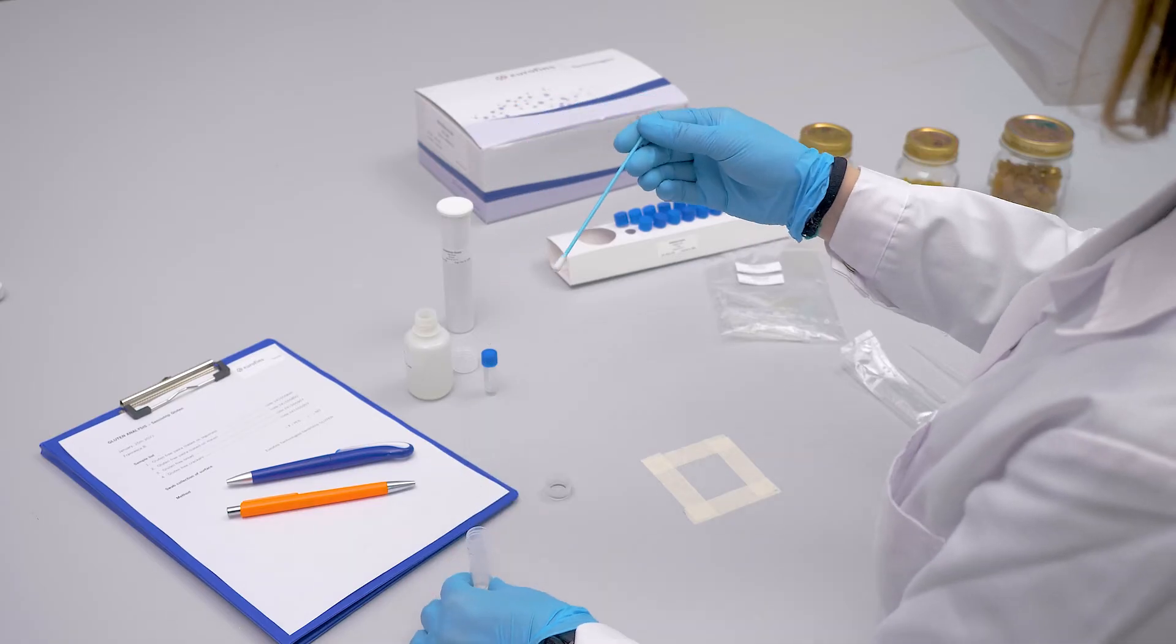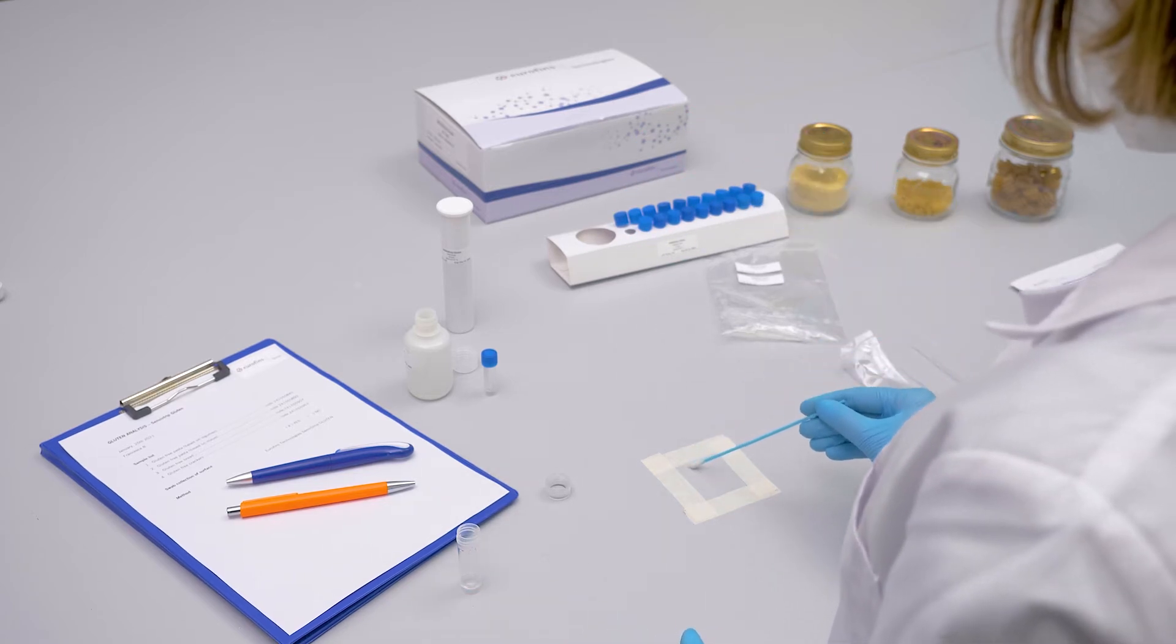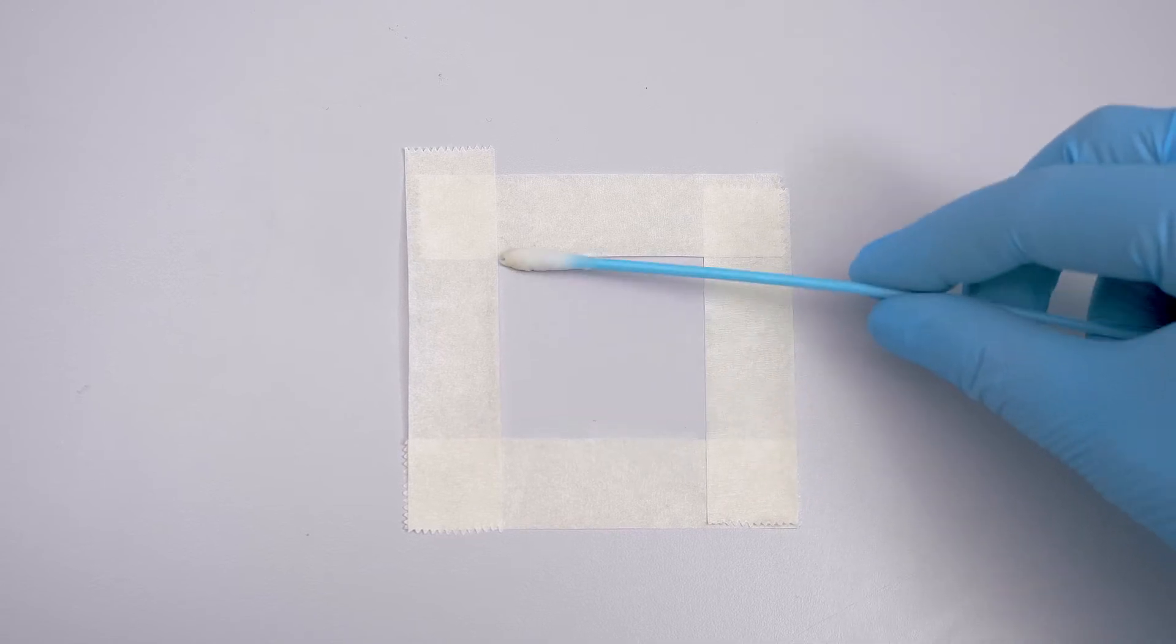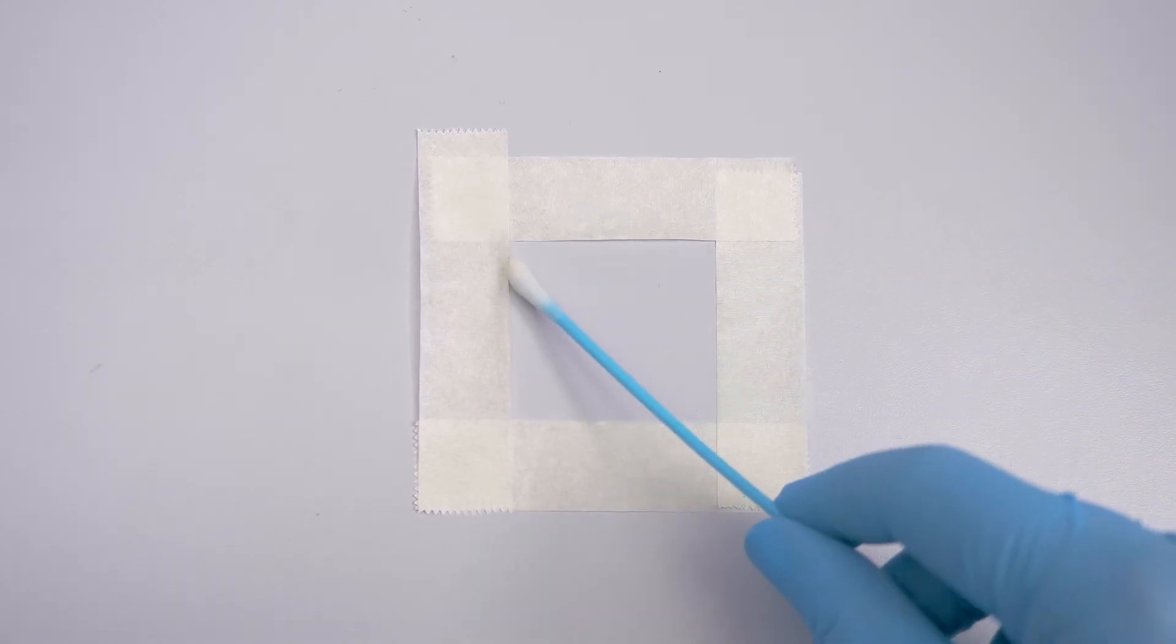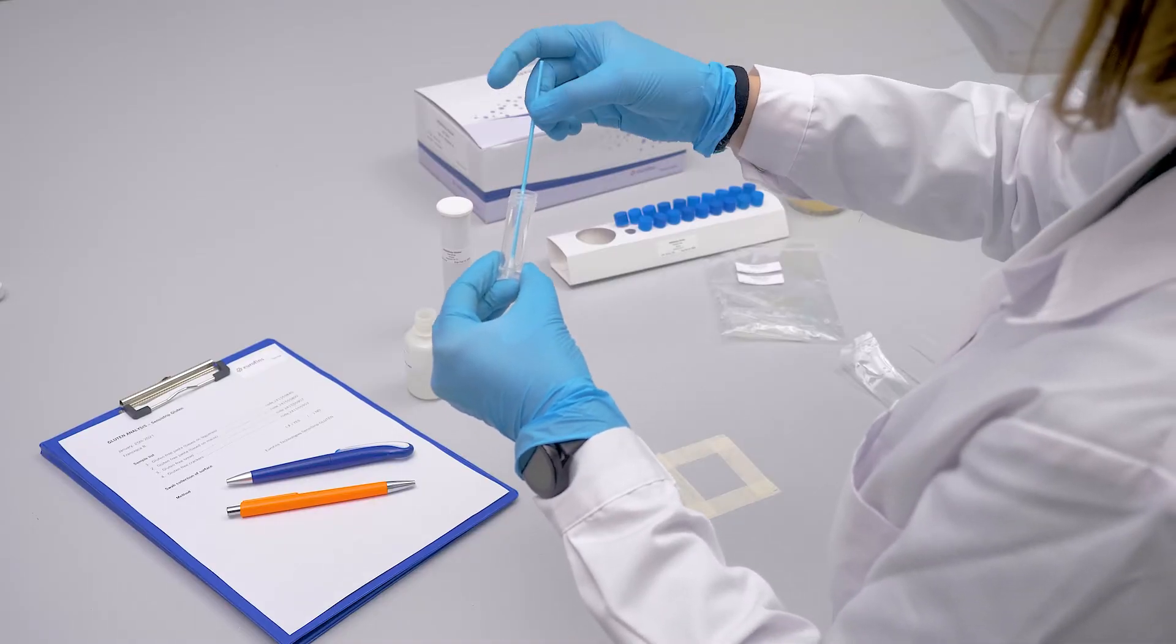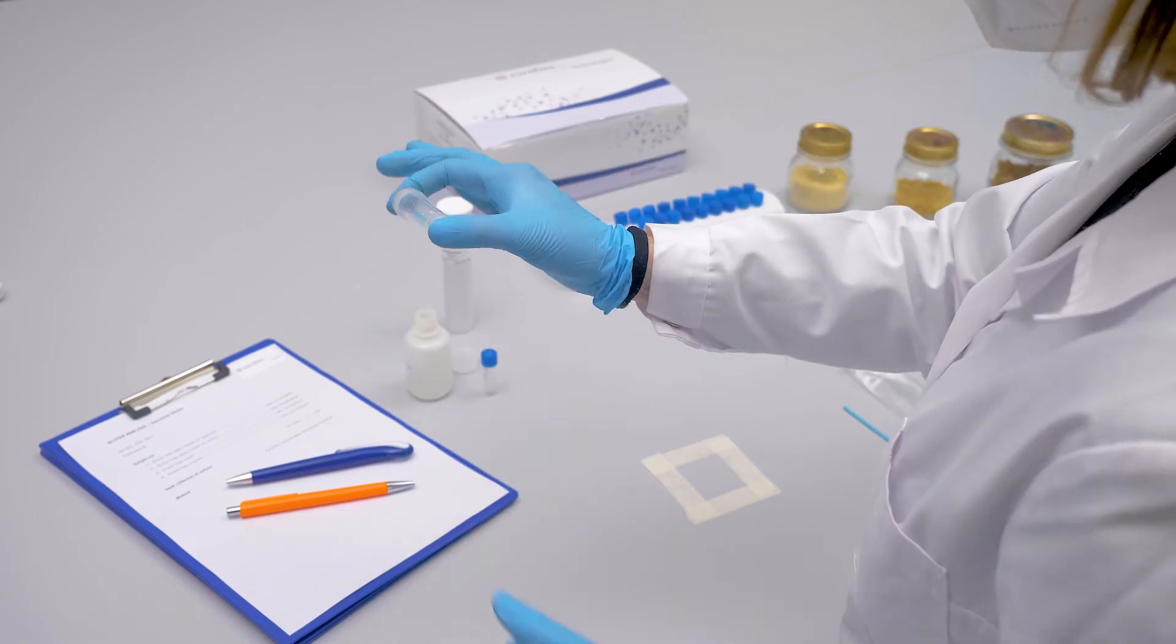For effective sampling, it is recommended to rub the swab on the surface in three directions: horizontal, vertical, and diagonal, rotating the tip of the swab. Insert the swab into the extraction tube, break it into the tube and then close it.